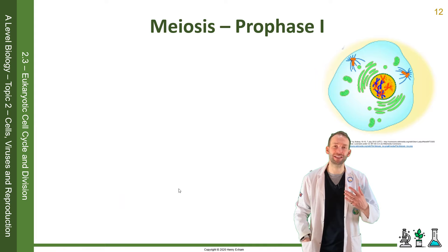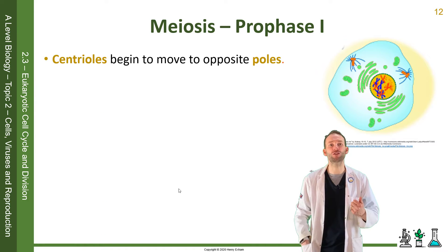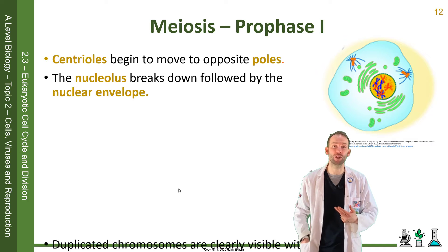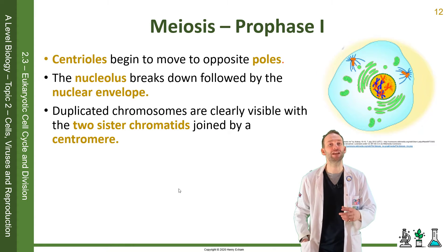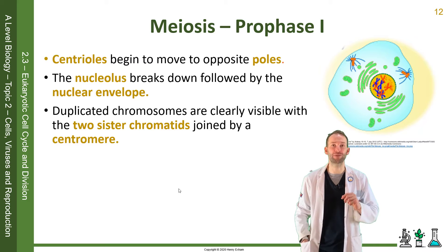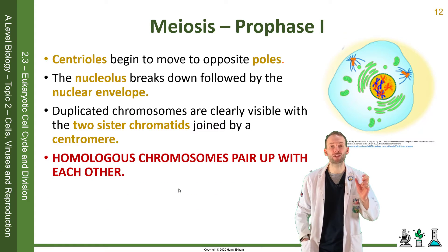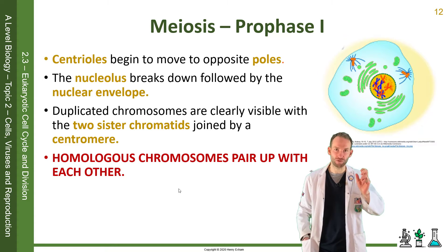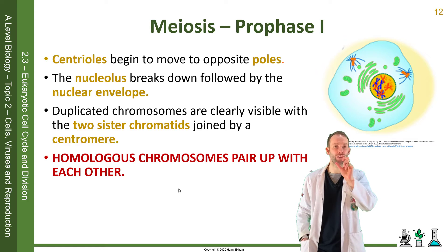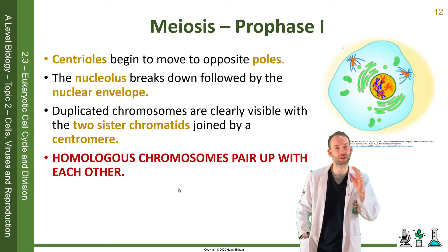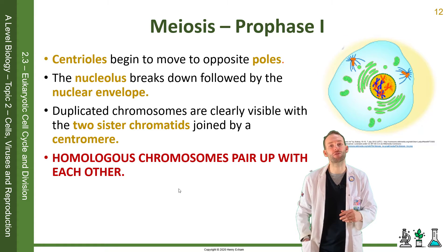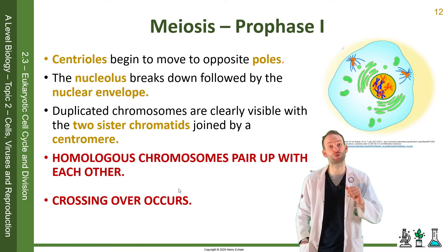In prophase one, it starts off exactly the same as mitosis. Centrioles go to opposite poles, the nucleolus and nuclear envelope break down, and the sister chromatids are clearly visible now that the DNA has fully condensed. But this is where the first important difference happens. At this point, the chromosomes start to come together in their homologous pairs. So this replicated chromosome from the mother and the replicated chromosome from the father come together — chromosome one will match up with chromosome one, two with two, three with three, to form these 23 pairs. And a very important process happens called crossing over.